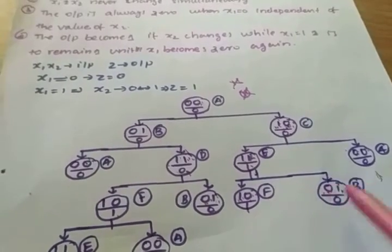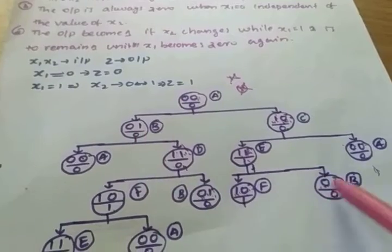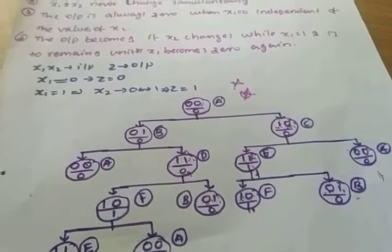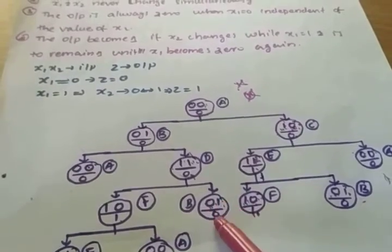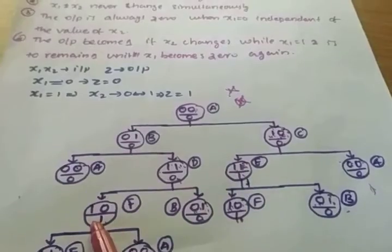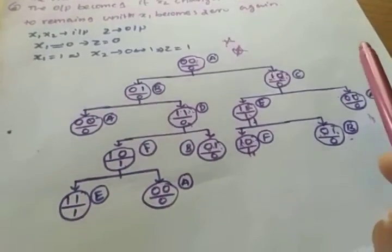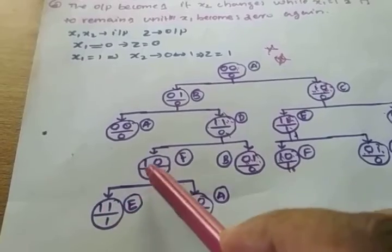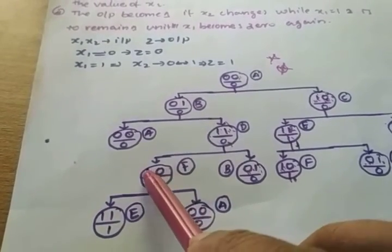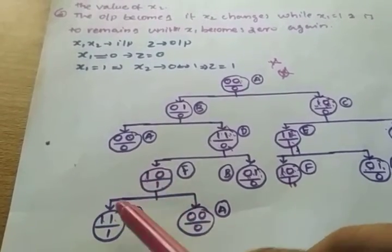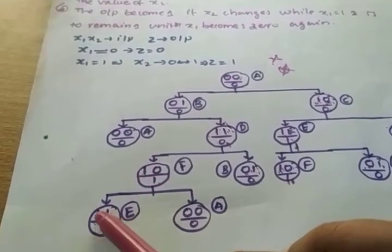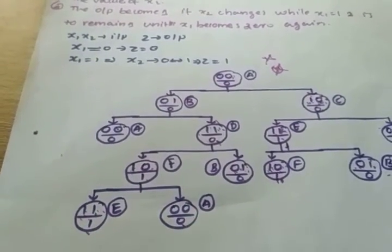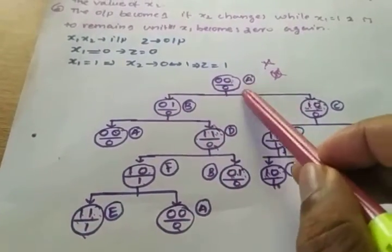Checking combinations: 0,1,0 is already defined. Now checking 1,0,1 — it is defined in state 2. Only one variable can change at a time. Changing 0 to 1 gives 1,1 with output 1 (x1=1, x2 transitions from 0 to 1). Going back to 0,0 gives output 0. State 1,1,1 is already defined, and 0,0,0 is already defined. The flow diagram is now complete.